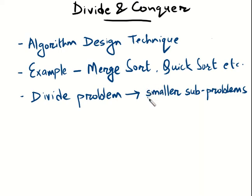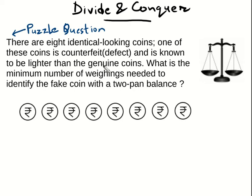Before we begin with the formal introduction, let us start with an interesting puzzle. There are eight identical-looking coins. One of these coins is defective and all others are genuine — the defective coin is lighter in weight while all other coins are of the same weight. Your job is to find the minimum number of weighings needed to guarantee that you will find the fake coin. You are given a two-pan balance but no weights.